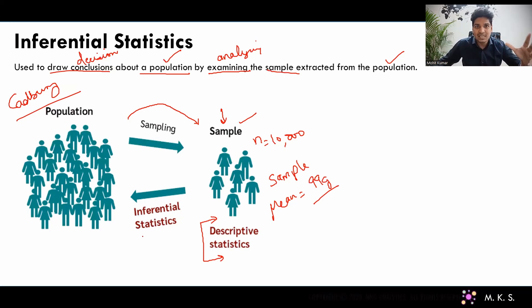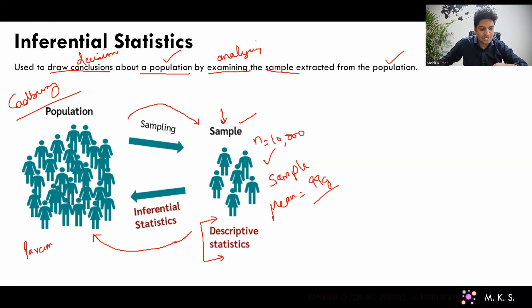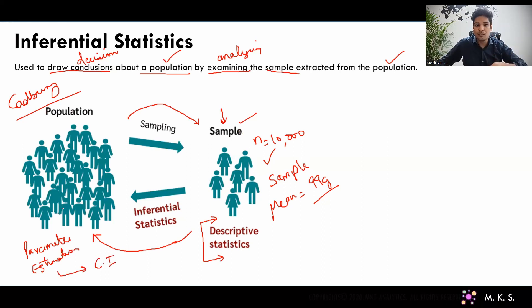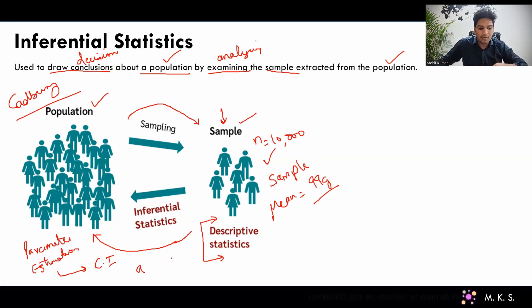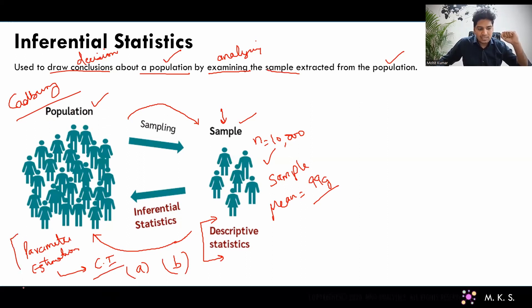In the case of inferential statistics, we need to infer about the population, not about the sample. To actually infer about the population from this sample, you need a technique which we call parameter estimation. We are going to learn about two techniques: point estimation and confidence interval, which will tell you with some confidence that the population mean — or the population chocolate's average weight — lies between two numbers, between A and B. How do we calculate A and B, basically the upper bound and lower bound, we will discuss in our upcoming videos related to confidence interval. This is one of the techniques we use to infer about the population from the sample.